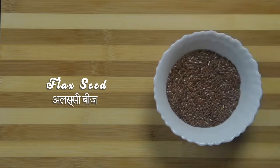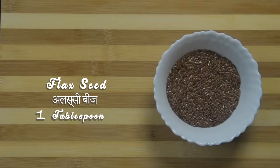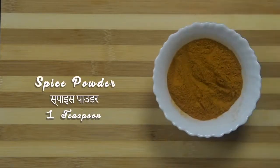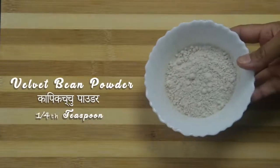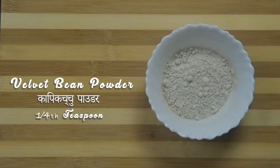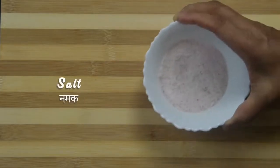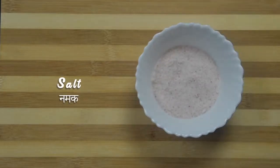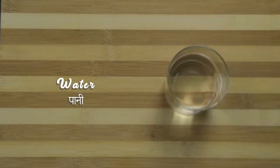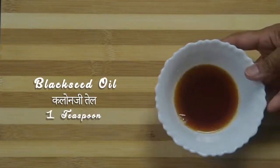Ingredients to make flax drink: 1 tablespoon flax seeds, 1 teaspoon spice powder, 1/4 teaspoon velvet bean powder or kapikacchu powder, 1 cup curds, salt to taste, 1/2 to 3/4 cup water.